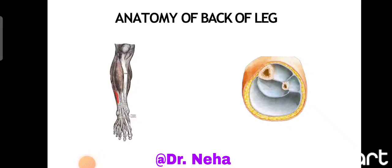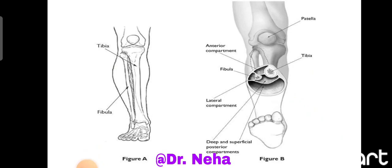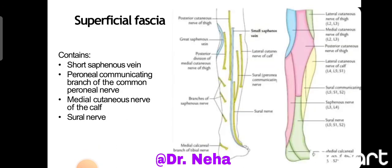Hello everyone, in this video we will see about the anatomy of the back of the leg. In this diagram we can see, when we take the transverse section of the leg, we can see the three compartments of the leg: one is the anterior compartment, second is lateral, and the third one is the posterior compartment, which we call the back of the leg. The cutaneous innervation of the back of the leg is supplied by the posterior cutaneous nerve of the thigh in the upper part, in the lower part by the sural nerve, the lateral aspect by the lateral cutaneous nerve of the calf, and the medial aspect by the saphenous nerve.